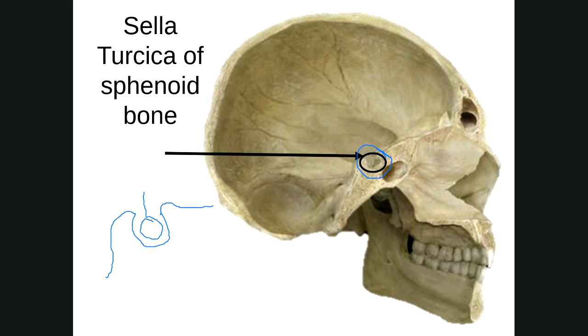Just commit the sella turcica to memory. The area right here — all of this is the sphenoid bone. It literally looks like a saddle.